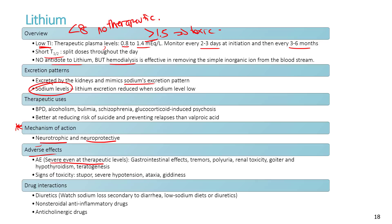Lithium excretion follows sodium's excretion pattern, so sodium levels must be monitored. Low plasma sodium decreases lithium excretion, risking toxic accumulation. Adverse effects are severe even at therapeutic levels and include gastrointestinal upsets (dyspepsia, nausea, vomiting), tremors, polyuria, kidney toxicity, hypothyroidism, goiter, and teratogenicity in pregnant women.